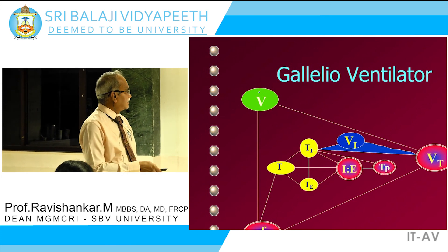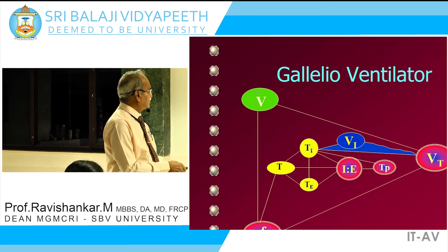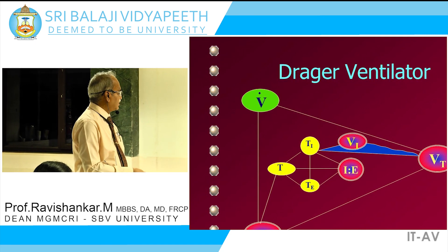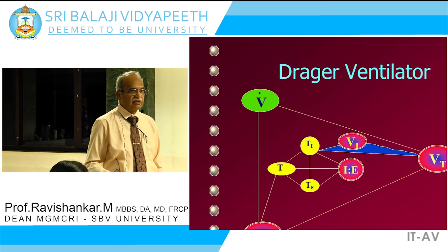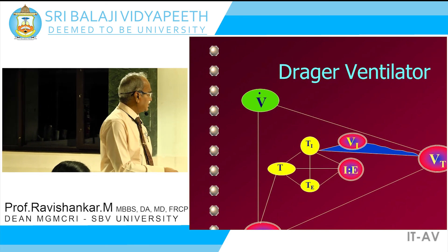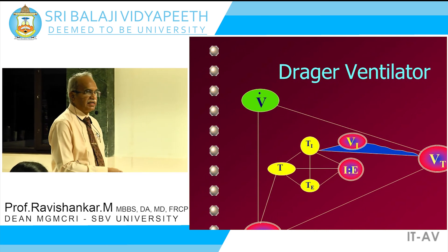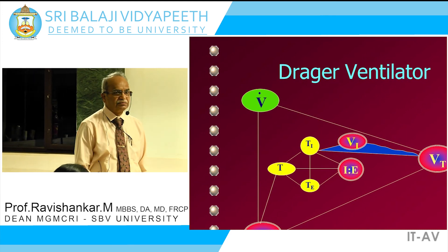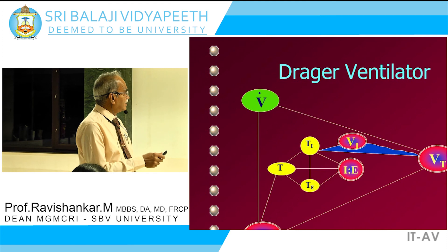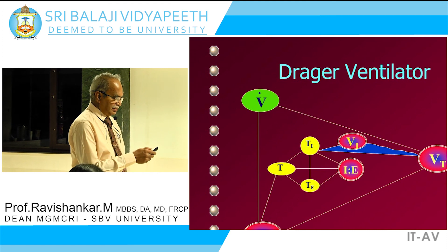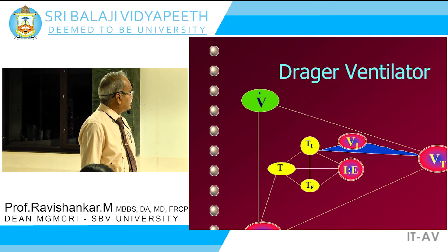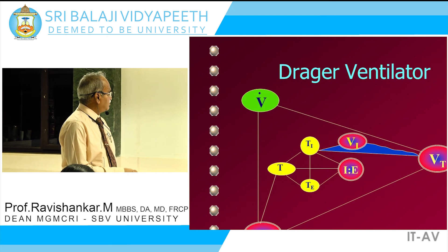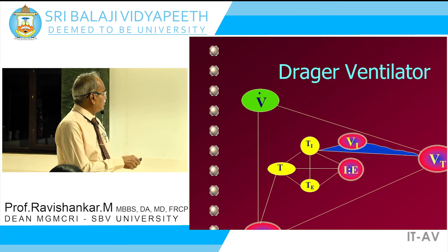Then you have the Dragger ventilator, where you set the tidal volume, peak flow, and I:E ratio. It is volume-controlled, flow-limited, and time-cycled. This terminology comes based on what you are setting and what you are controlling. Modern ventilators can be broadly classified into pressure-based mode, volume-based mode, and combined mode of ventilation.